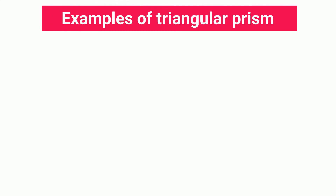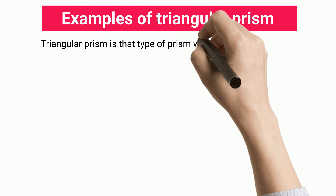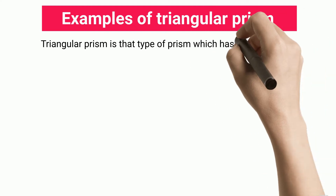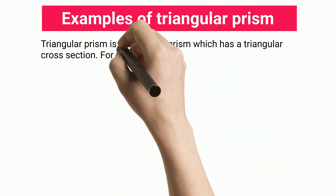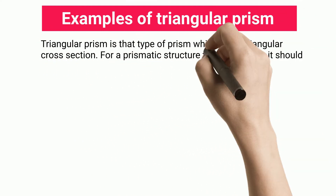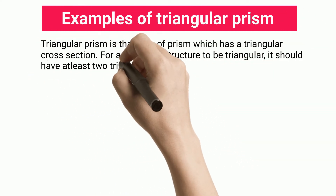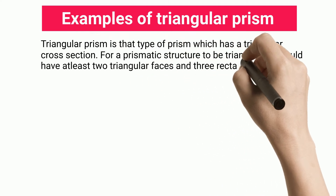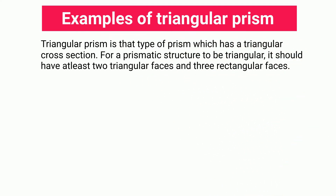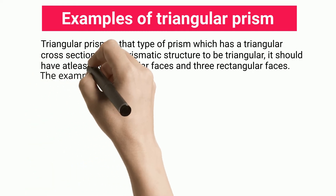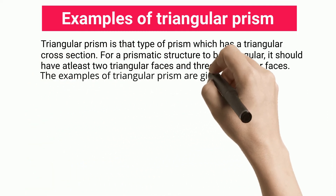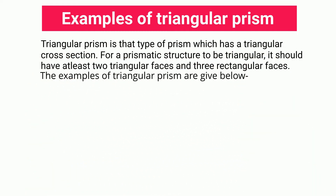Examples of triangular prism: a triangular prism is that type of prism which has a triangular cross-section. For a prismatic structure to be triangular, it should have at least two triangular faces and three rectangular faces.